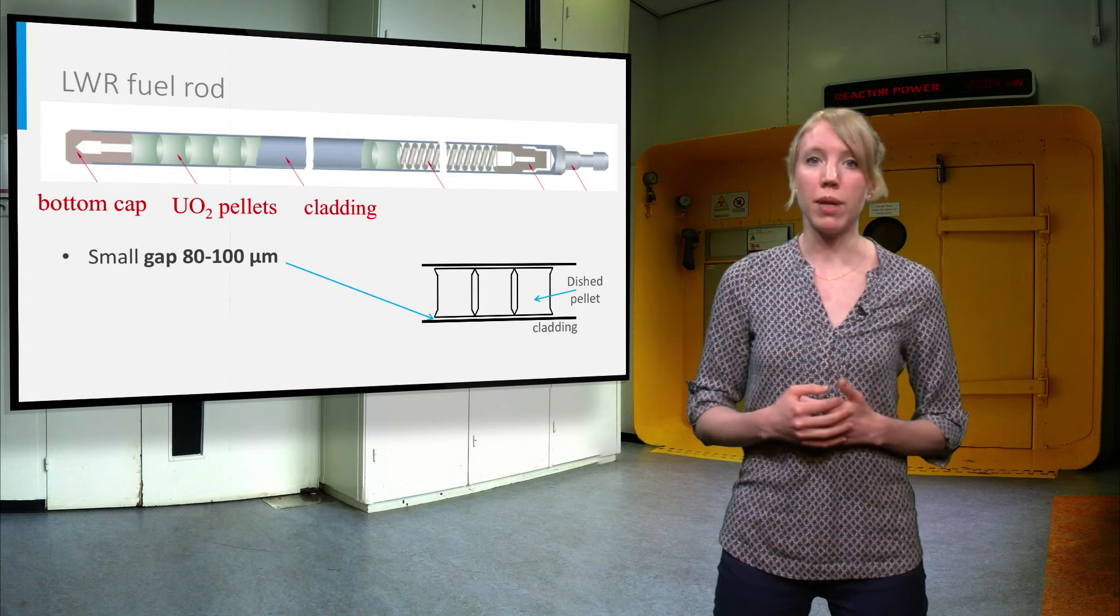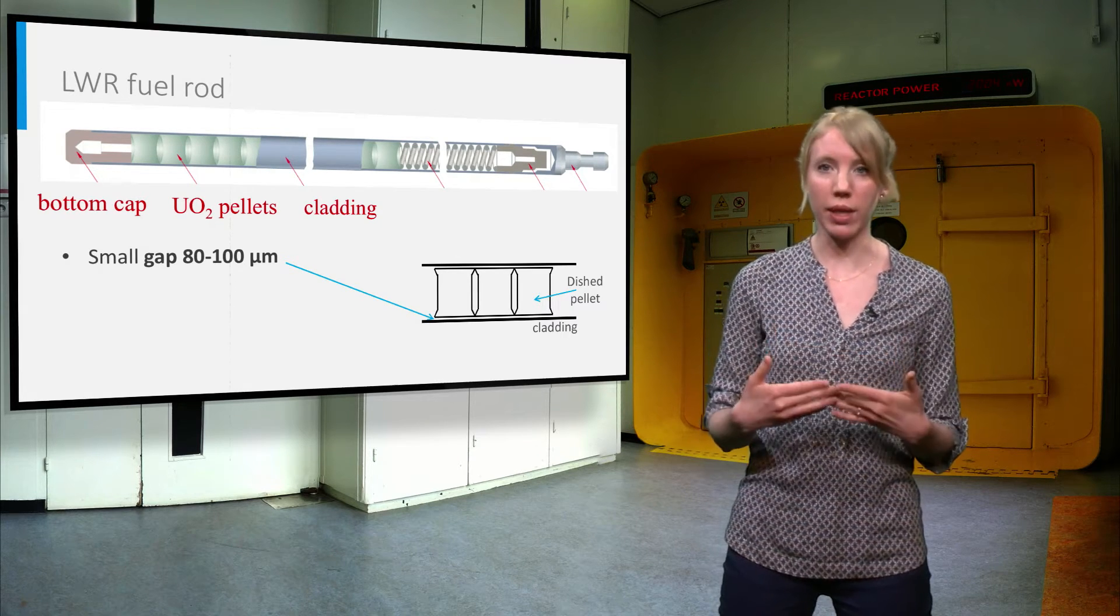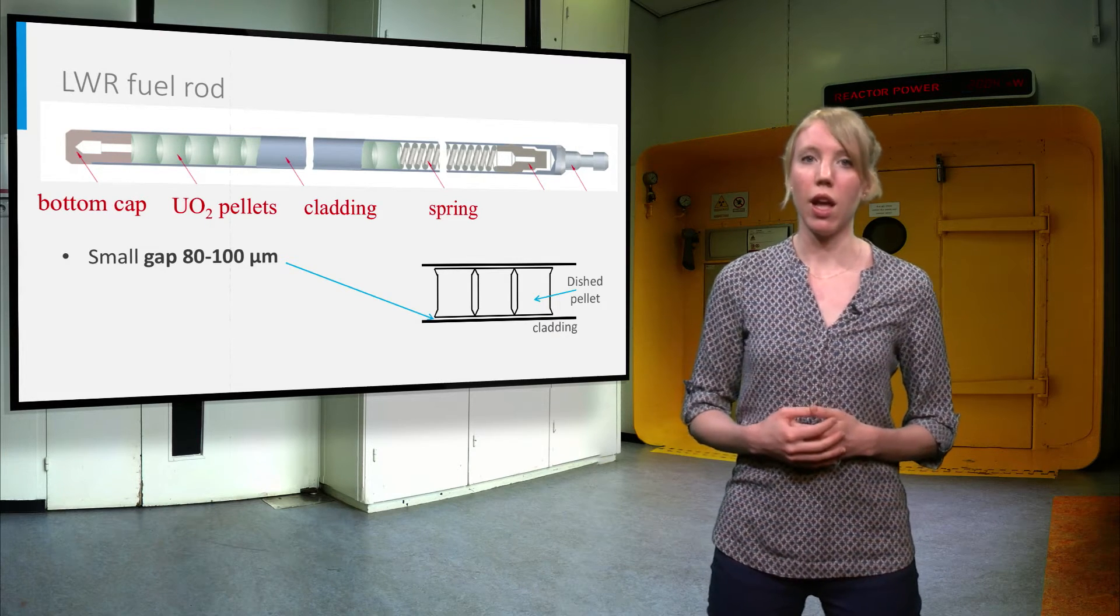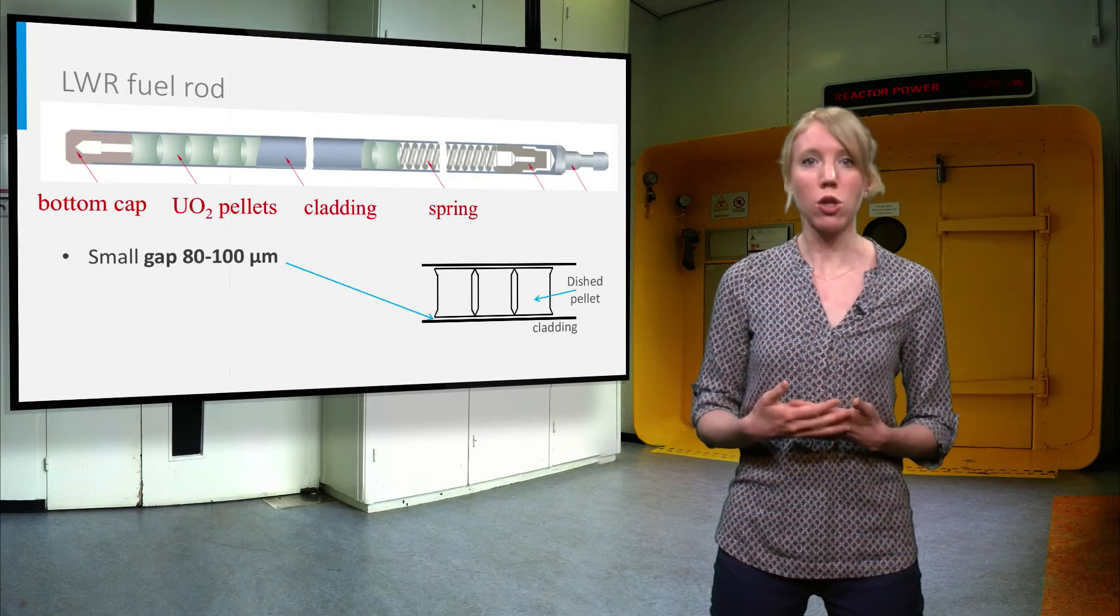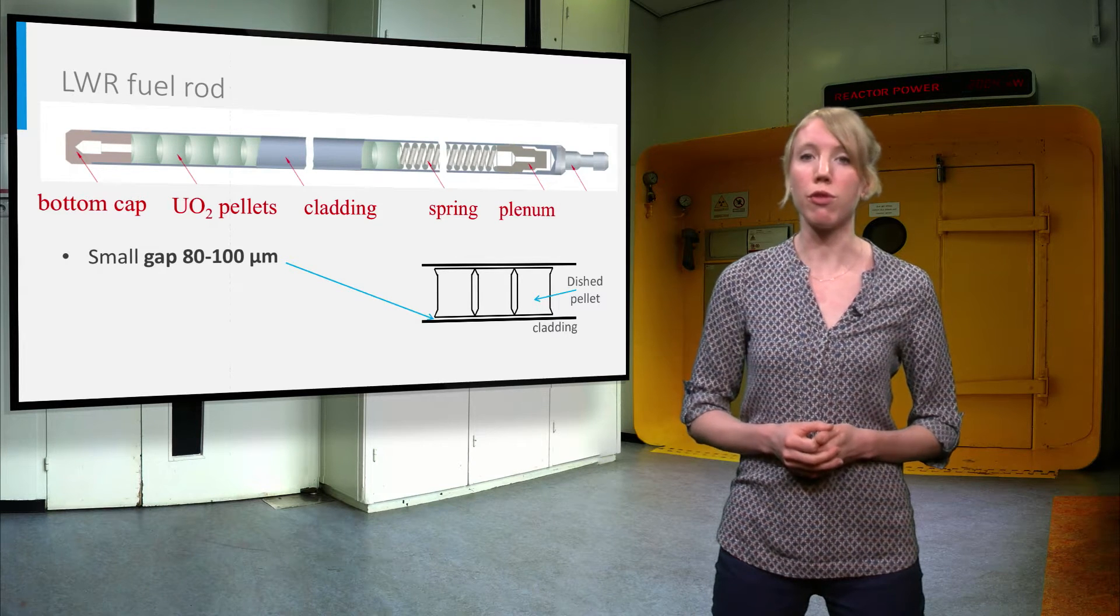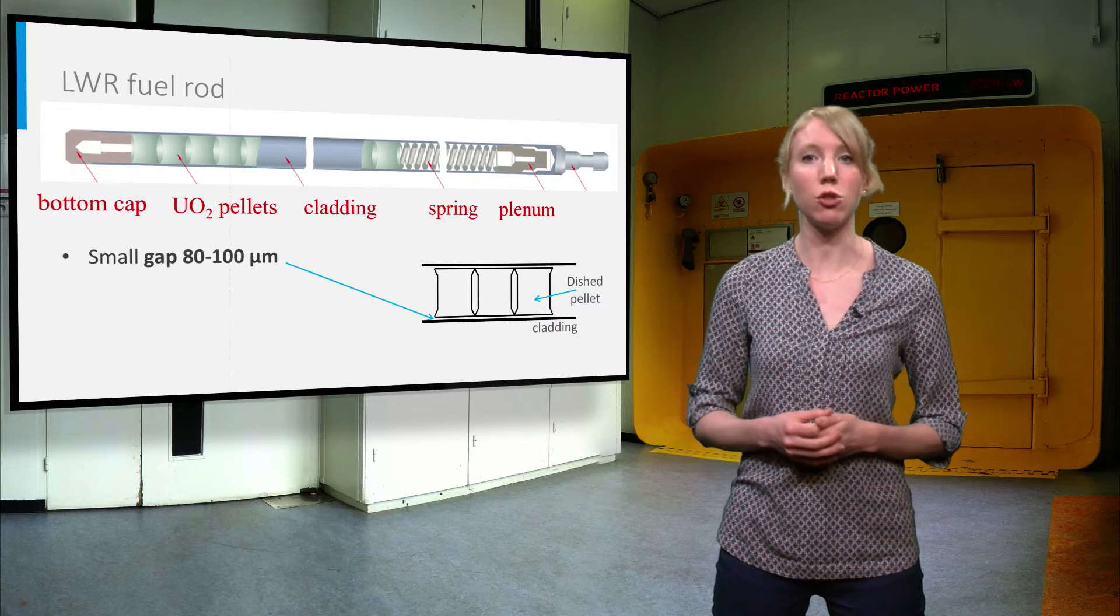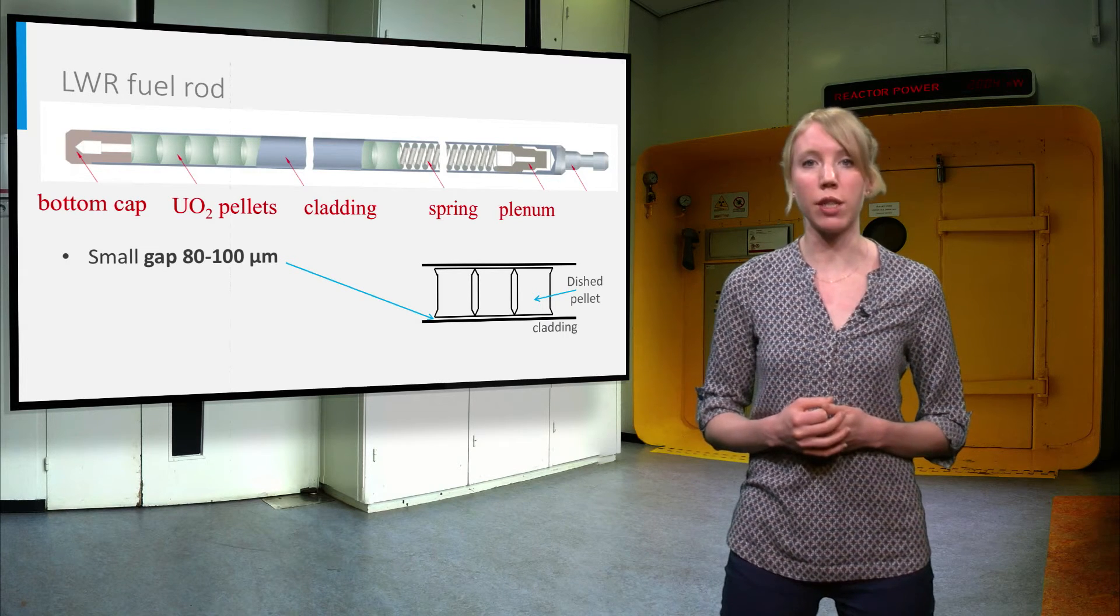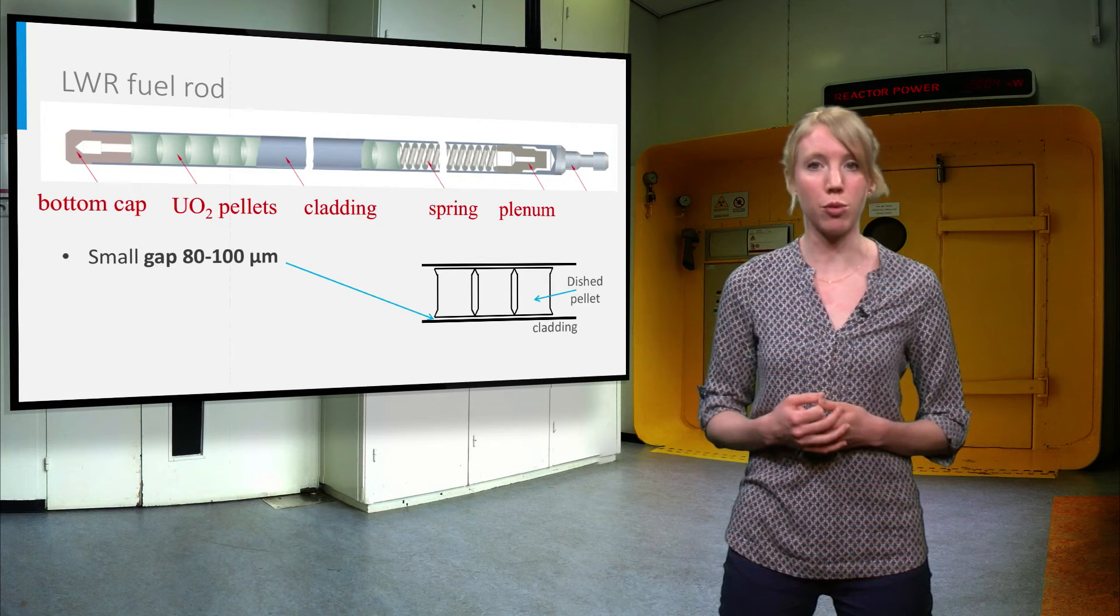The pellets are kept in place in the rod by a metallic spring that is mounted on top of the pellet stack. The free volume around the spring, called the plenum, is used as buffer volume for the fission gases that are released during the irradiation. This avoids that the pressure inside the rod rises to unacceptable levels.